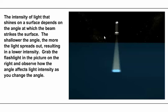We have a situation here where our virtual flashlight is pointed directly at an object, so the light comes in perpendicularly and strikes the object. You can see that the light is fairly bright — it's spread over a small area, so the amount of light per unit area is high and the light is intense as it strikes the object.